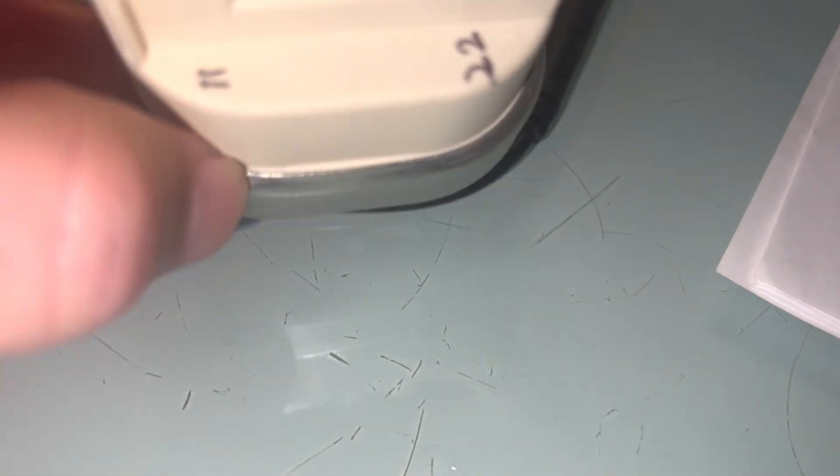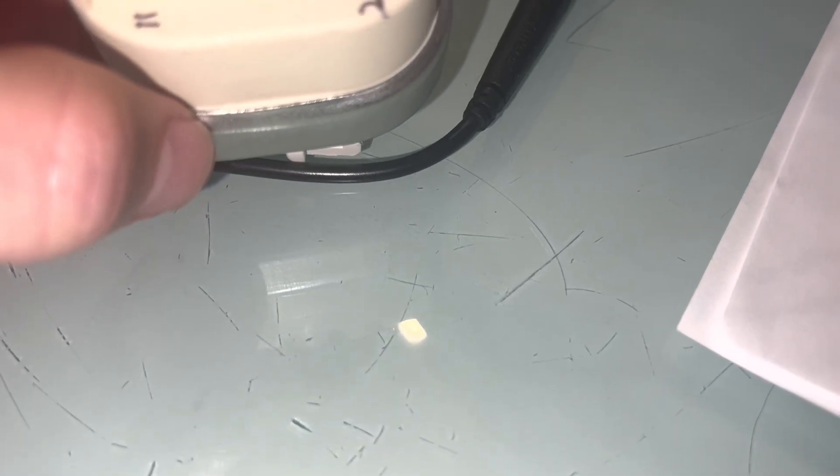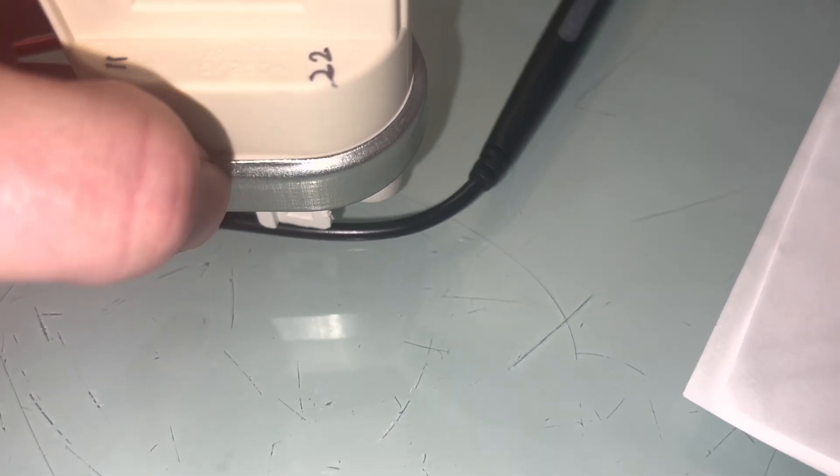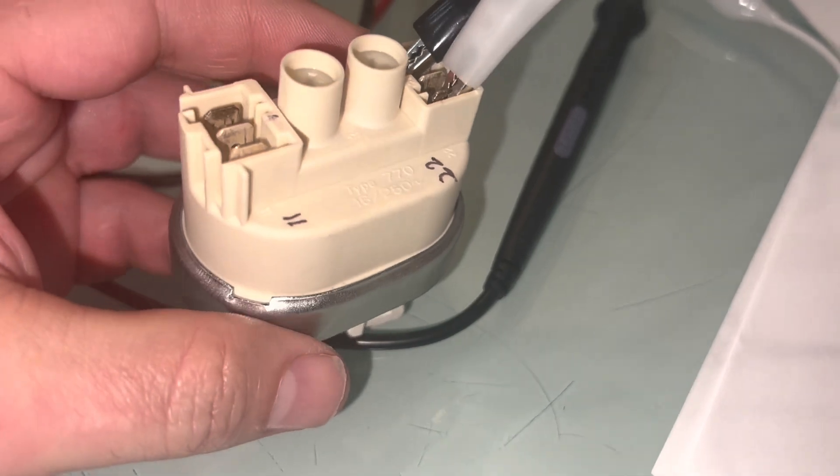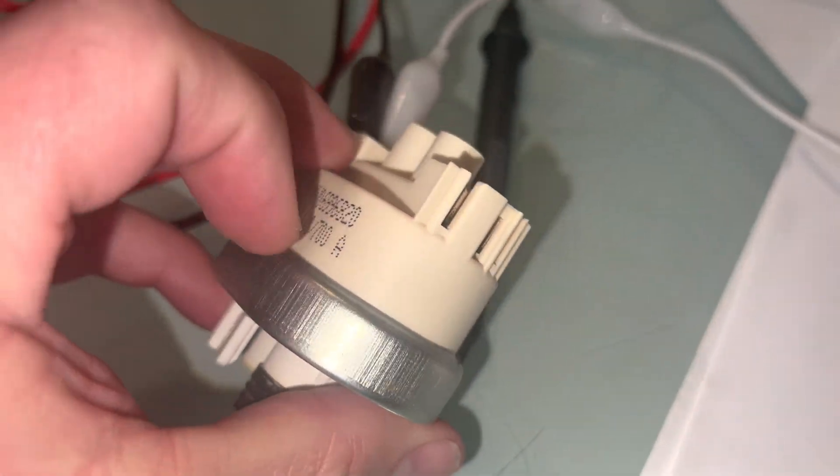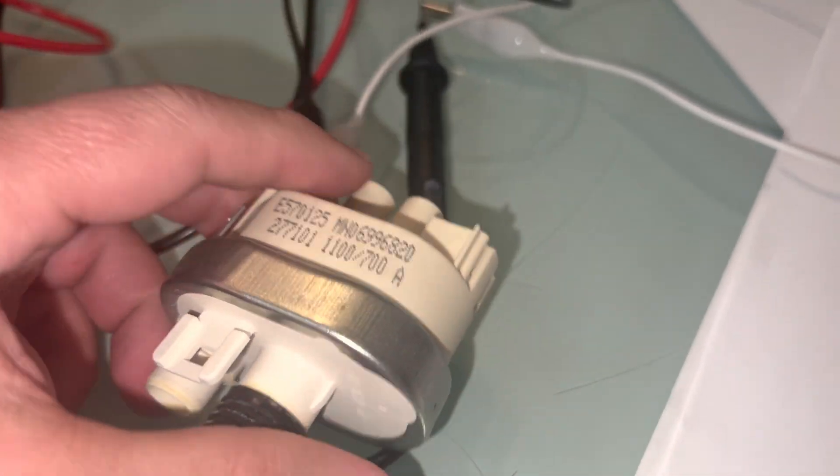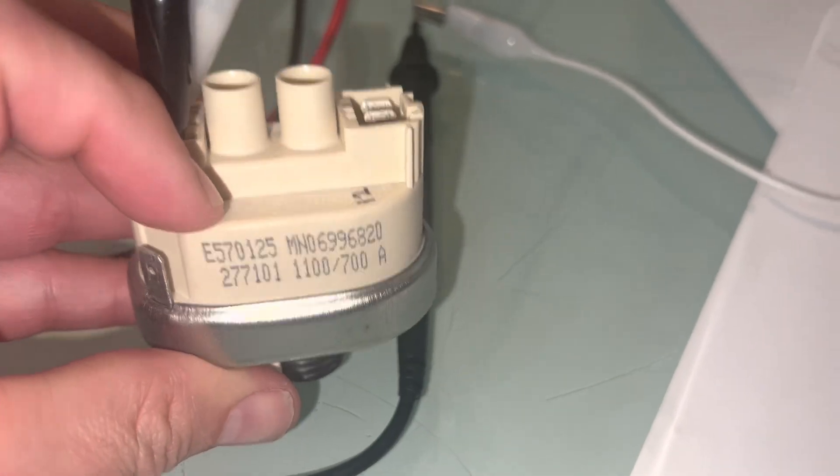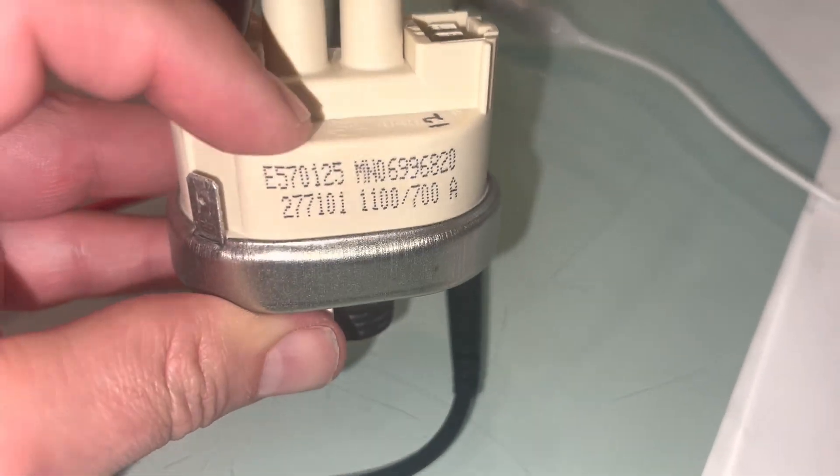I'm going to put a flathead screwdriver around here and bend the metal rim out and open it and see if there's any water or moisture inside. This would give me certainty about what happened.